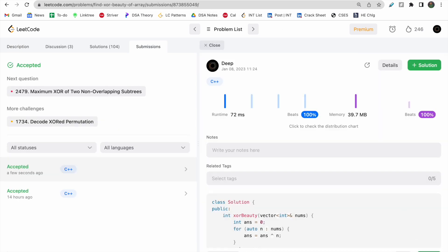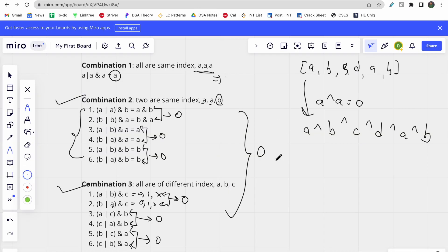Let me submit this. It got accepted! I hope you understood the solution and the logic of why we're just doing XOR of all these numbers, because other answers nullify. If you understood the solution, please give it a like and subscribe. Thank you!